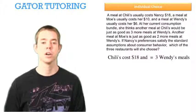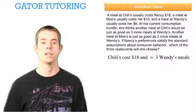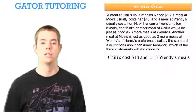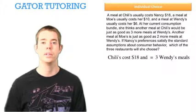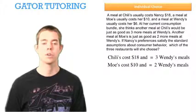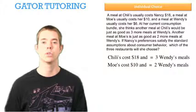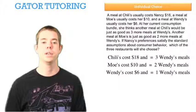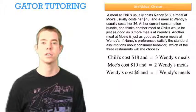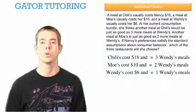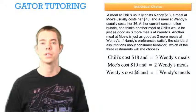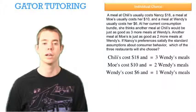Chili's cost is $18, and it's equal to three Wendy's meals. Moe's cost is $10, and it's equal to two Wendy's meals. Wendy's cost is $6, and we know it's equal to one Wendy's meal because it is a meal at Wendy's.